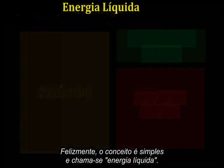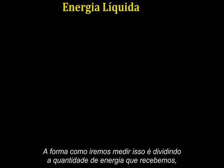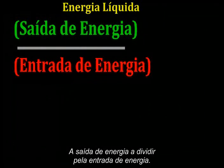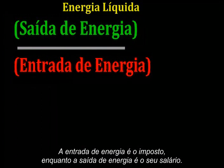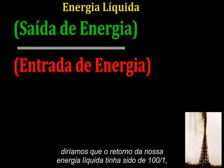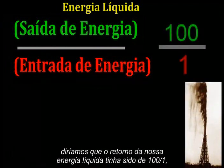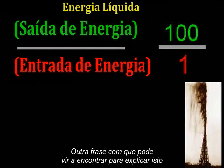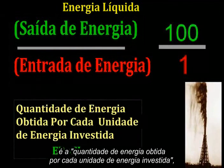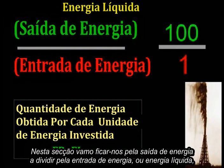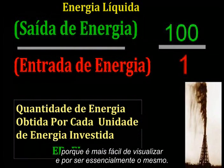Fortunately, the concept's easy, and it's called net energy. The way we're going to measure this is by dividing the amount of energy we get by the amount of energy we had to use in order to get that energy — energy out over energy in. Energy in is the tax, while energy out is your take-home pay. Another phrase for this is energy returned on energy invested, which goes by the acronym EROEI. We're just going to stick with energy out divided by energy in, or net energy, as it's easier to visualize.